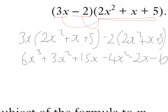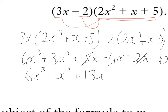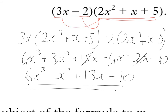And then collect together like terms. So 6x cubed, I've got 3x squared take away 4x squared is minus x squared. 15x take away 2x is 13x. Minus 10. And that is the final answer.